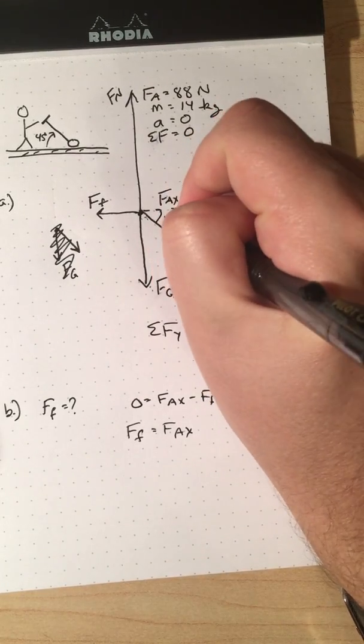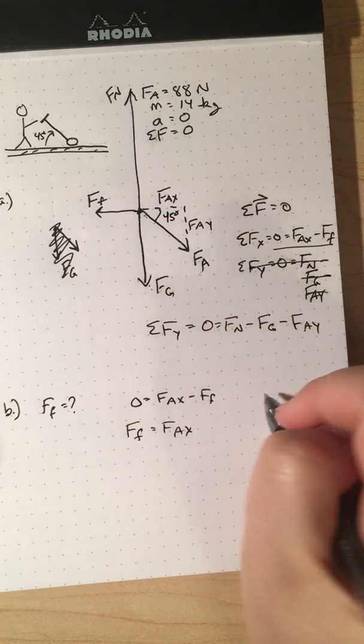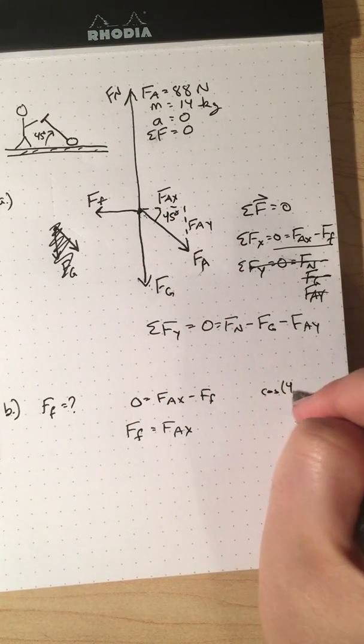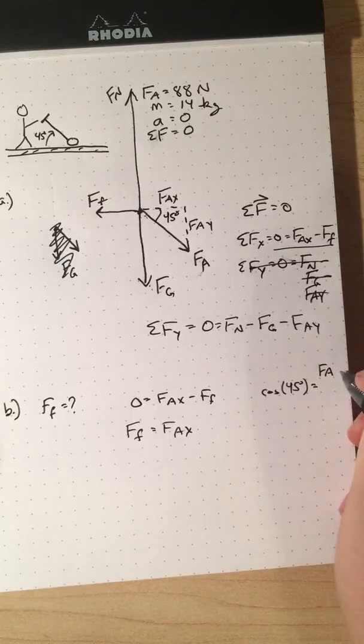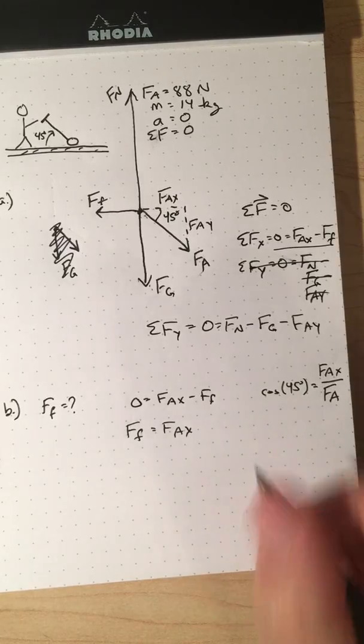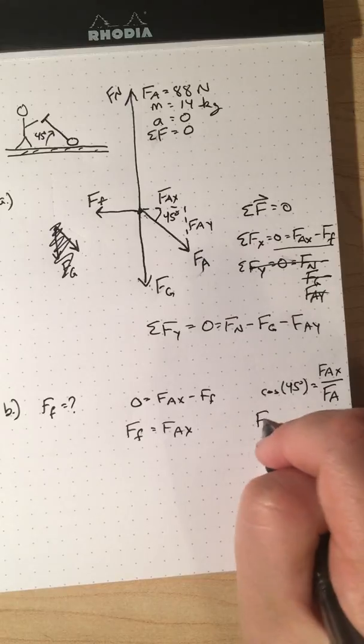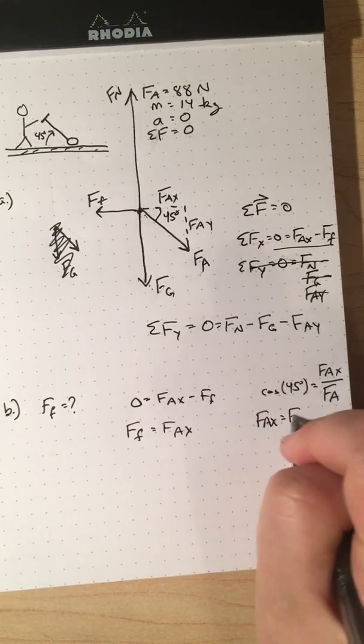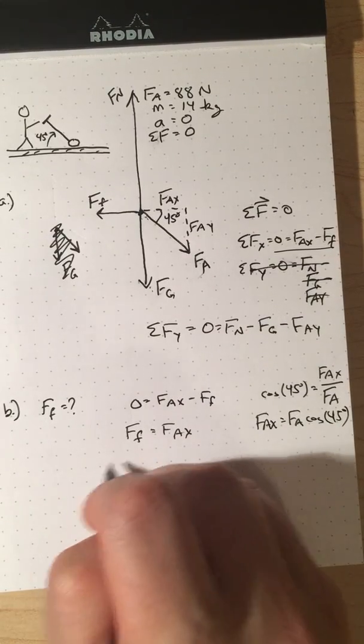If I look at the triangle I have here, you should see that I can write the cosine of 45 degrees should be the adjacent divided by the hypotenuse. So F_A_X divided by F_A. So in other words, F_A_X is F_A times the cosine of 45. So there we go.